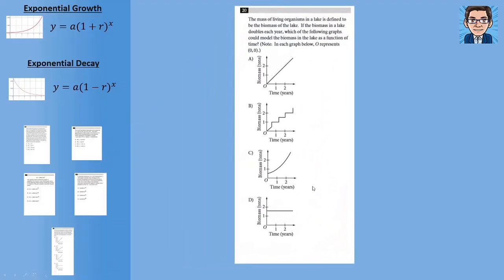And then sometimes if you're lucky, they're just looking for the shape of the graph. So the mass of living organisms in the lake is defined to be the biomass of the lake. So it doubles each year. That's the key to this. That tells us that it's an exponential growth if it's doubling each year. So then that gives us exponential growth. The graph is going to look like this, the shape of the graph. These two are just linear. That's linear growth. This is no growth at all. And this is some kind of a step function for growth. So the only one that represents doubling each year, the graph would look like this or choice C.